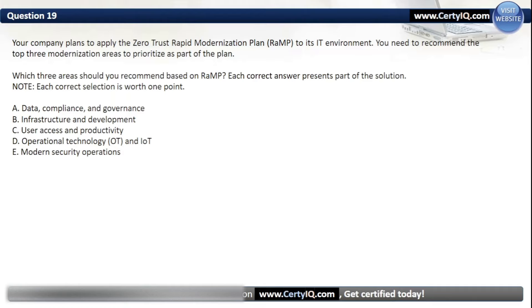Question 19. Your company plans to apply the Zero Trust Rapid Modernization Plan (RaMP) to its IT environment. You need to recommend the top 3 modernization areas to prioritize. The correct options are A, C, and E: Data Compliance and Governance, User Access and Productivity, and Modern Security Operations.